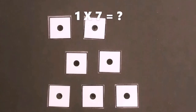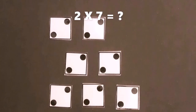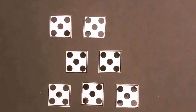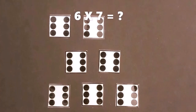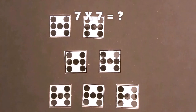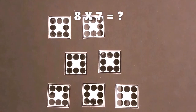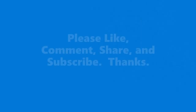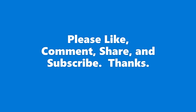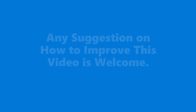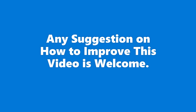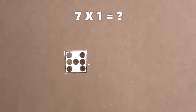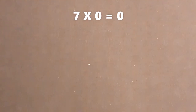One times seven is... Two times seven is... Three times seven is... Four times seven is... Five times seven is... Six times seven is... Seven times seven is... Eight times seven is... Nine times seven is... Ten times seven is... Seven times two is... Seven times one is... Seven times zero is zero.